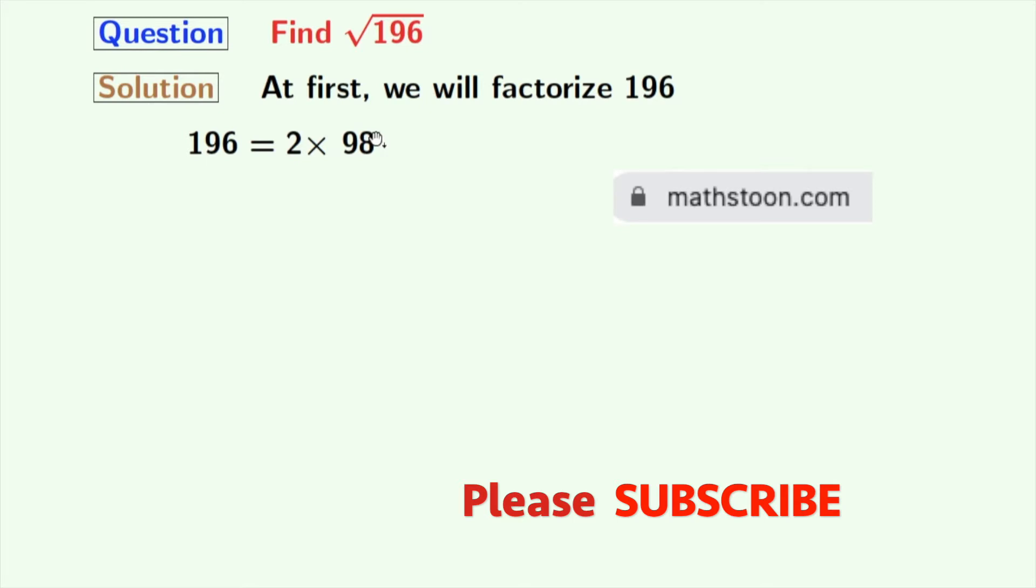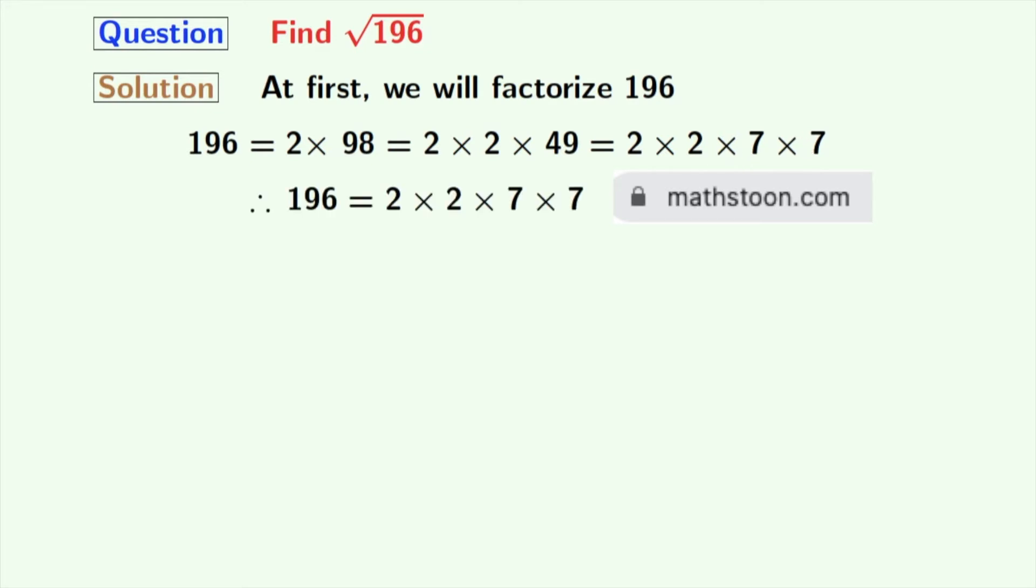Now we know that 49 = 7 × 7. Look that all these factors are prime numbers, so we will not factorize further. So finally we get 196 = 2 × 2 × 7 × 7.